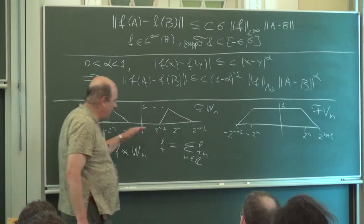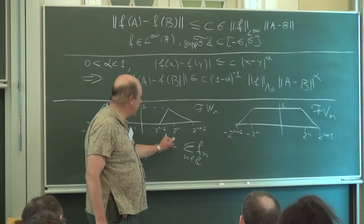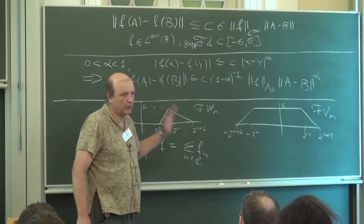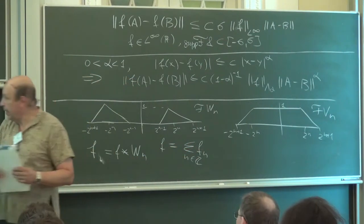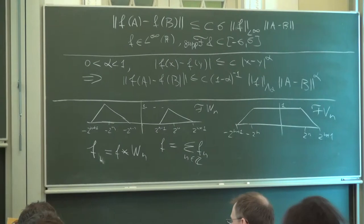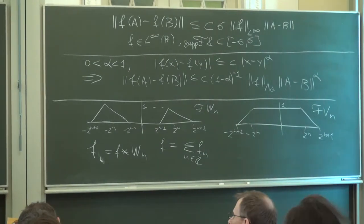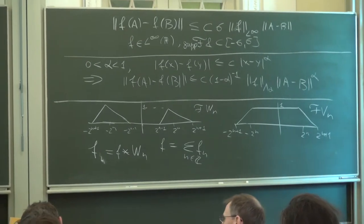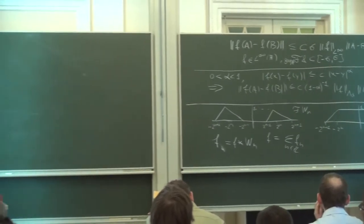I'm not going to discuss this in detail. I can say that if you take the derivatives of the left-hand side and the right-hand side then we have uniform convergence. The point is the sum of the Fourier transforms of W_n, if you sum them up, is equal to one except at the origin, where it is zero.